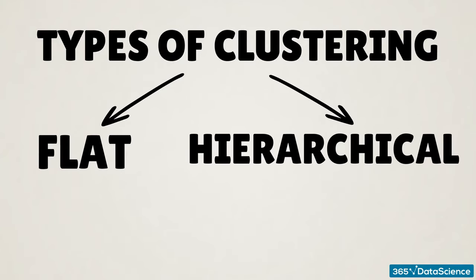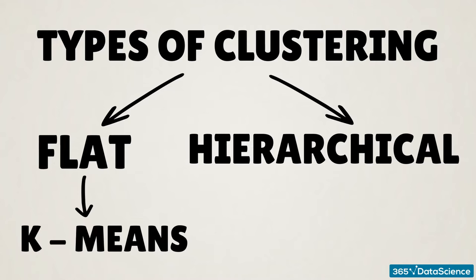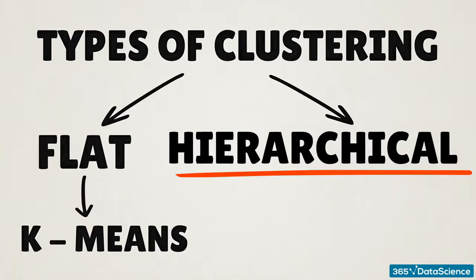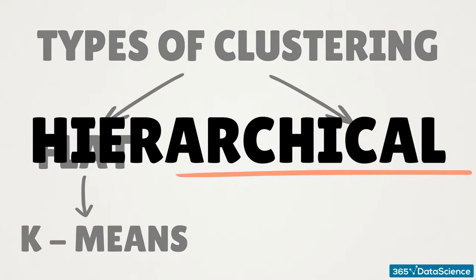K-means is a flat method in the sense that there is no hierarchy, but rather we choose the number of clusters and the magic happens. The other type is hierarchical, and that's what we are going to discuss in this lecture.